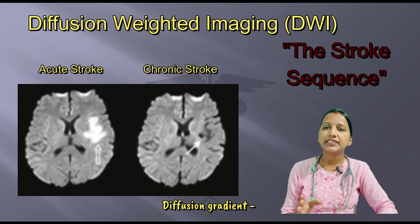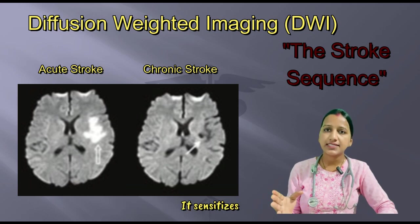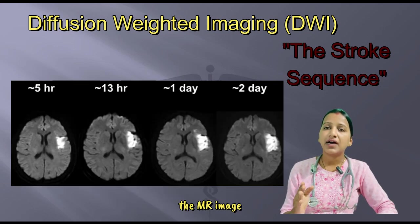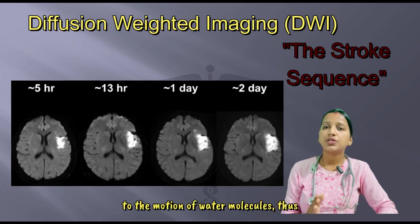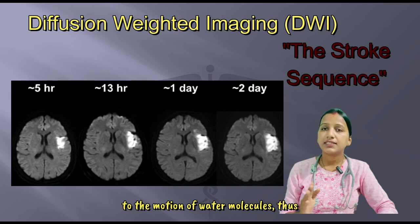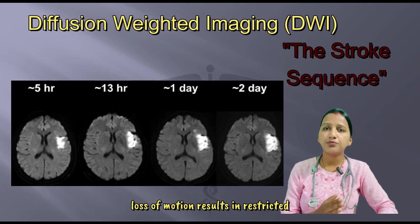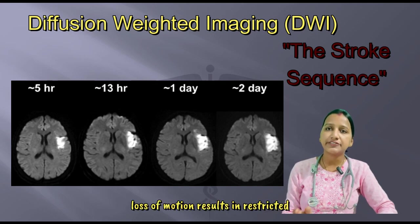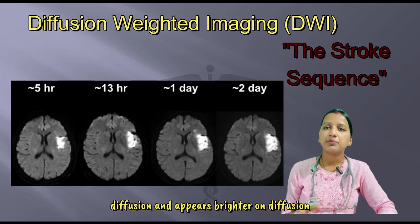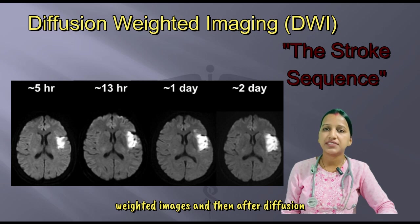Diffusion gradient sensitizes the MR image to the motion of water molecules. The loss of motion results in restricted diffusion and appears brighter on diffusion-weighted images.